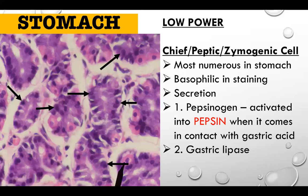The second cell type is the chief cell, also called peptic cells or zymogenic cells. They are the most numerous in the stomach but are not the parenchyma. They are basophilic in staining, and their secretions are pepsinogen and gastric lipase. Pepsinogen, when activated by contact with gastric acid, turns into pepsin, which aids in protein digestion. Gastric lipase aids in lipid digestion in the stomach.